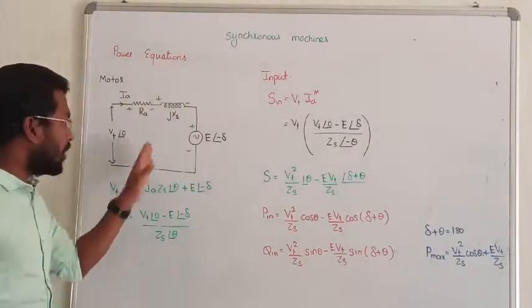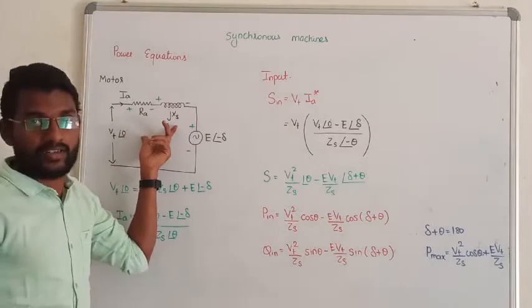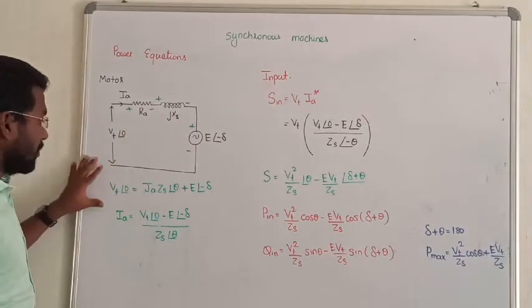Let us see the motor. The motor will end at our home where we have to give input. This is our motor, and this is our internal impedance draft. Again, apply KVL and you will get the equation for terminal voltage.